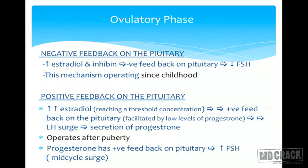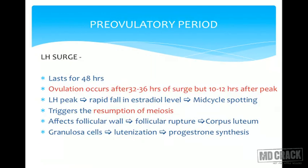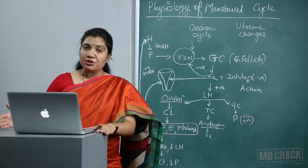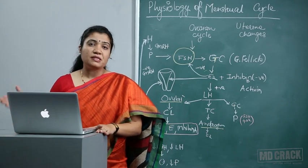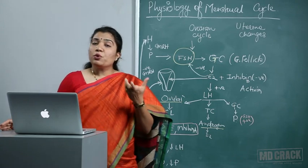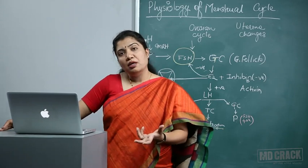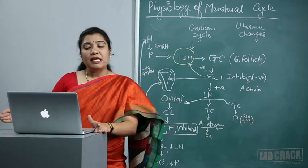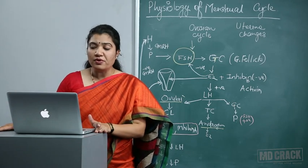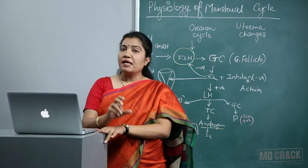The sudden maximum increase in estrogen in the pre-ovulatory phase makes cervical mucus spinnbarkeit — that typical pre-ovulatory mucus. This is the mid-cycle LH surge, which lasts 48 hours. Ovulation occurs 32 to 36 hours after the onset of the surge — an important MCQ asked again and again. If the question asks after the LH peak, the answer is 10 to 12 hours. The LH peak leads to a rapid fall in estradiol level, which may lead to mid-cycle spotting.